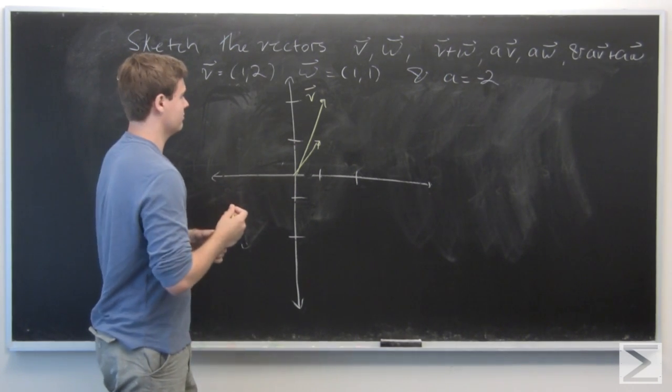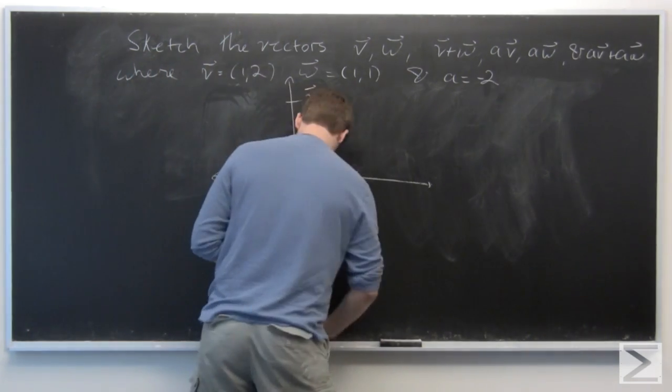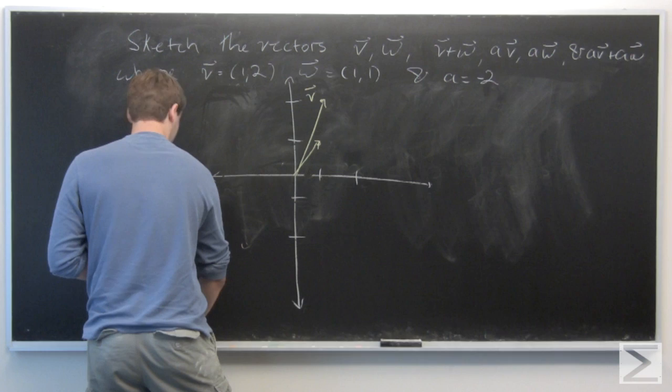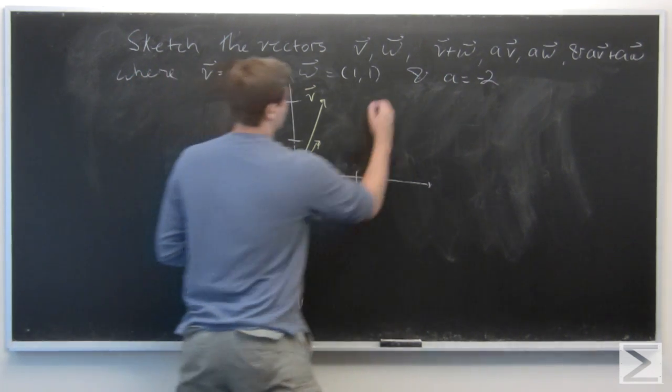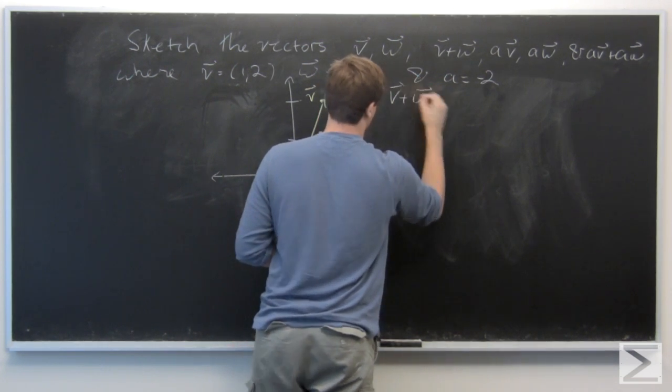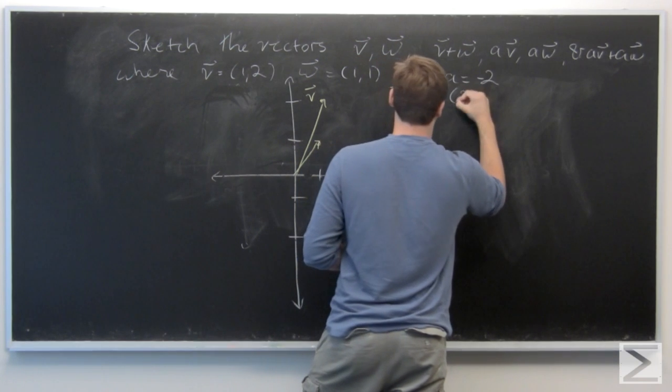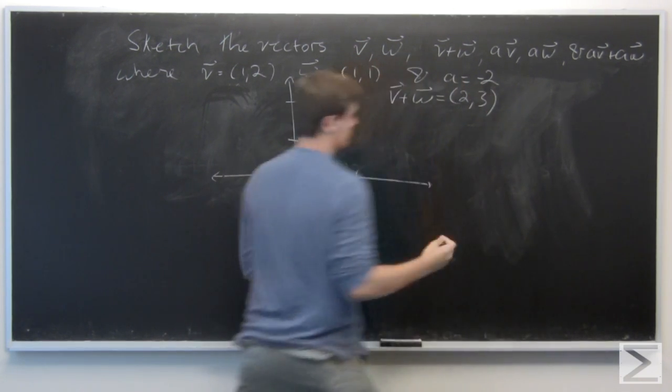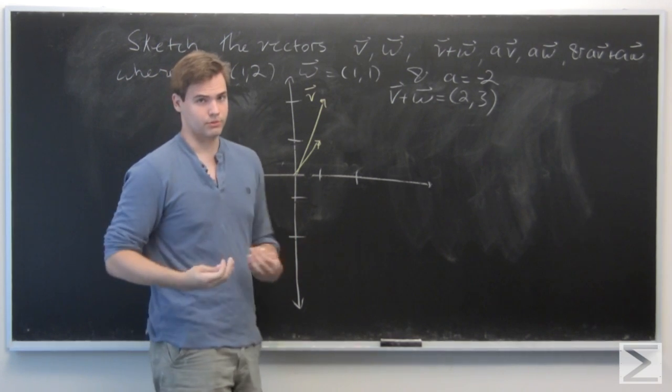So then their sum would just be, we can first calculate it. It's just going to be (2,3), because we just do arithmetic coordinate-wise.